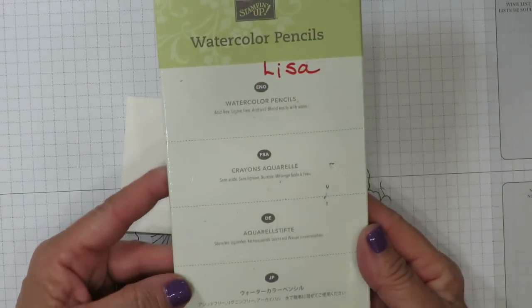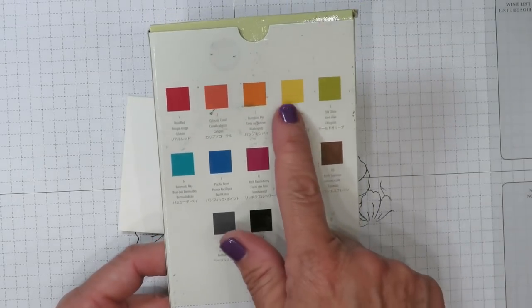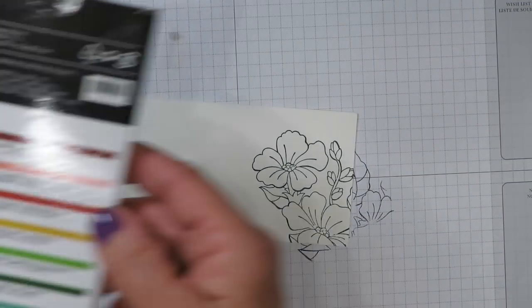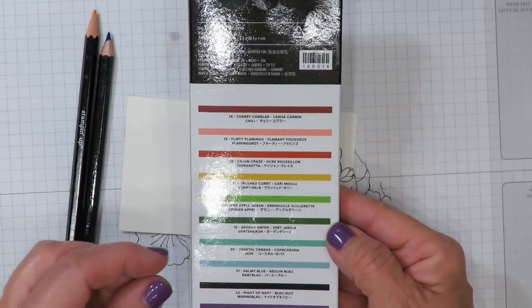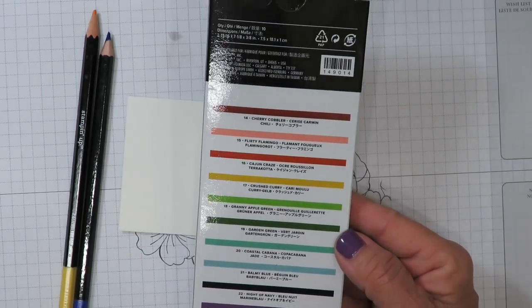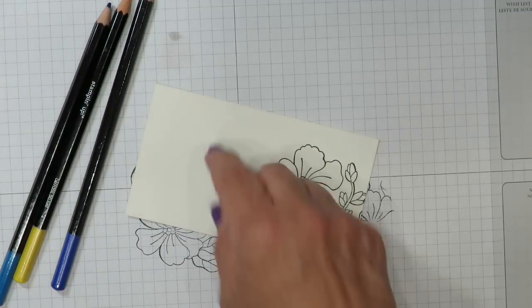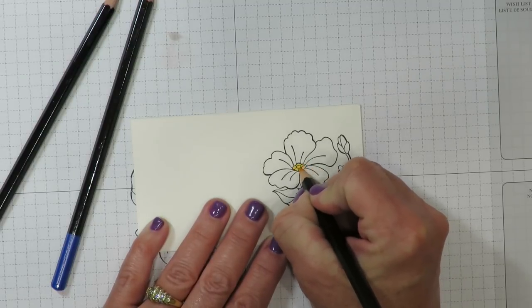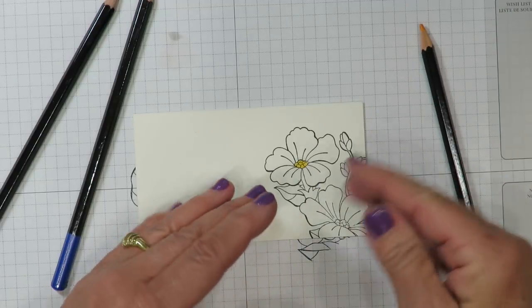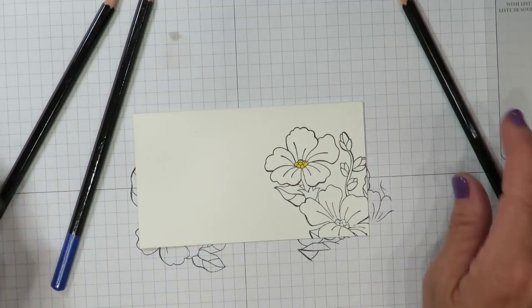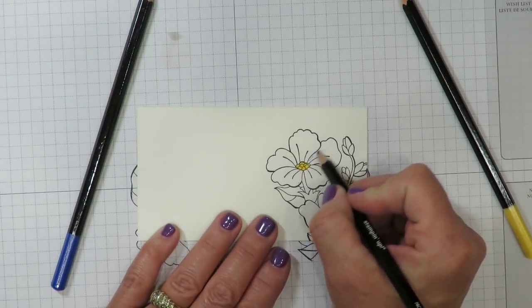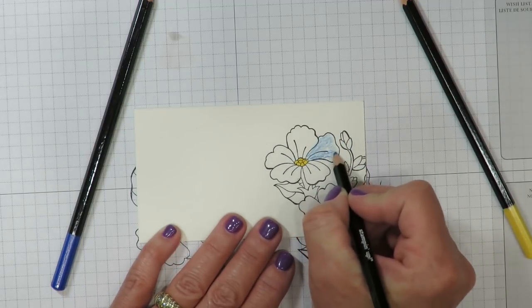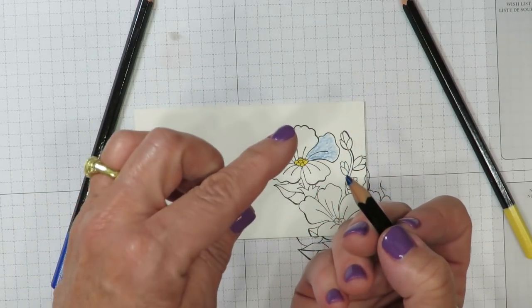Stampin' Up has a pack of 13 watercolor pencils in the annual catalog already and I've pulled out the daffodil and the Pacific Point for my flower. From the brand new pack of 10 watercolor pencils which are available only in August during this promotion I have pulled out the beautiful Night of Navy pencil. So I'm going to use these three colors to create some tones in this flower. I'm going to start with the yellow in the center. Now if you're not a fan of blending you don't have to. That's the great thing about this product. You're going to want to have a pencil that doesn't have a lot of sharp points on it. You're going to find that a pointed pencil is going to be very difficult to blend.